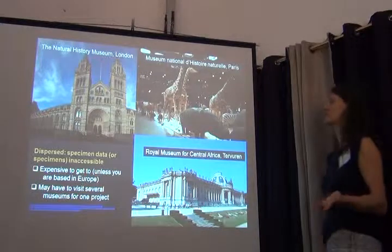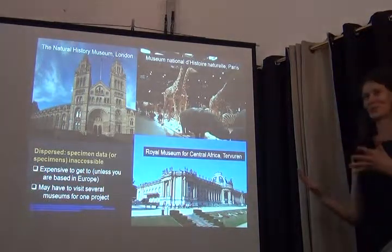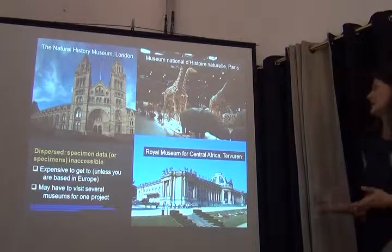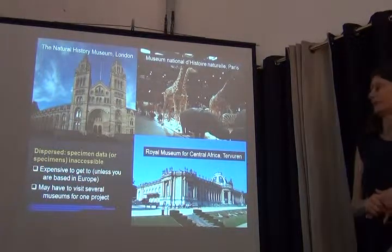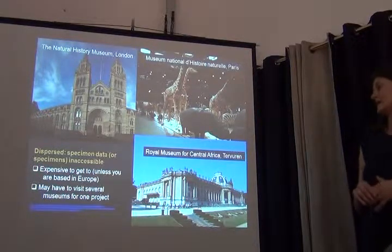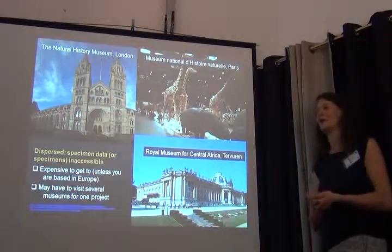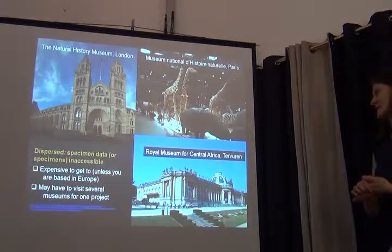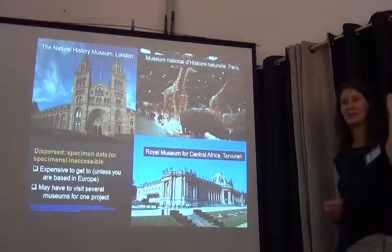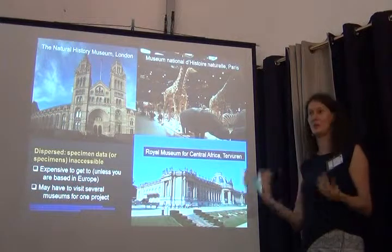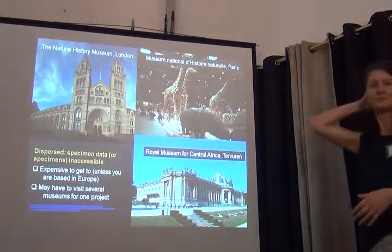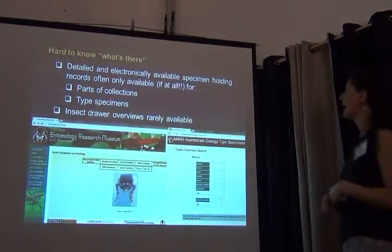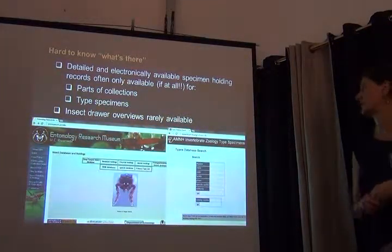For example, if you're interested in insect biodiversity anywhere in Africa, there are three museums you really cannot ignore for the groups I work on: the Natural History Museum in London, the Muséum National d'Histoire Naturelle in Paris, and the Royal Museum for Central Africa in Tervuren. But finding out what's in those collections is difficult and expensive — you may need to visit all three plus additional museums. Detailed and electronically available specimen holding records are often not there, making it very hard to know what is actually held.